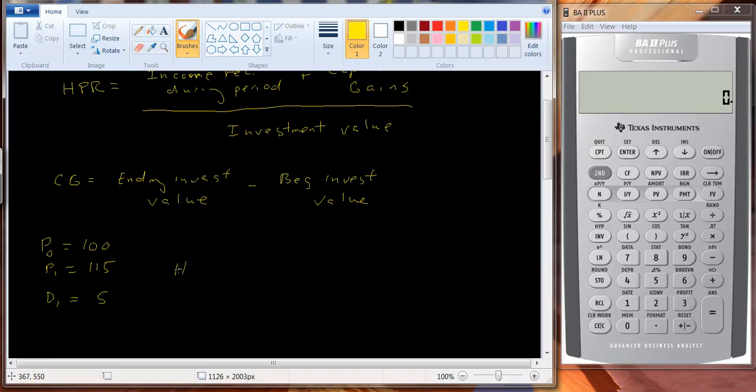Your holding period return is going to be equal to the $5 you received in income, plus your capital gains is going to be $115 minus 100. And that's all going to be divided by 100, that's the original amount of your investment. So that's going to be 20 over 100,